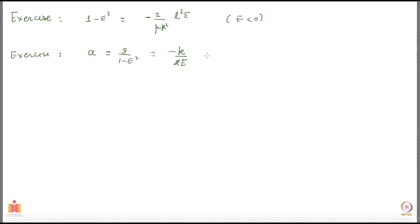Also note that the length of the semi-major axis does not depend on L — only on E. When you fire the reduced particle with reduced mass mu, the energy determines the semi-major axis. The length along the theta equals zero direction, from theta equals minus pi to zero, is completely determined by the energy; angular momentum has no role in determining that. So A is a function of E only.